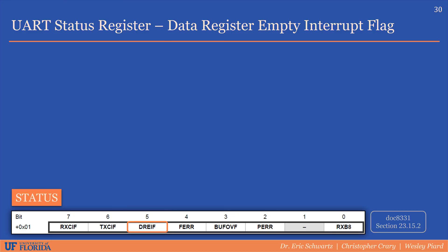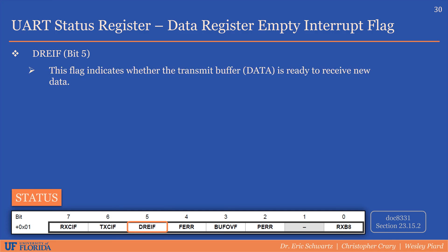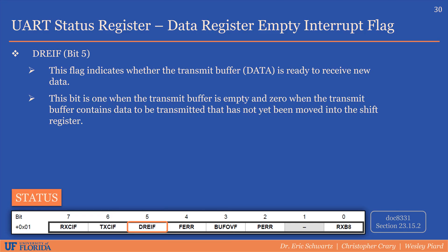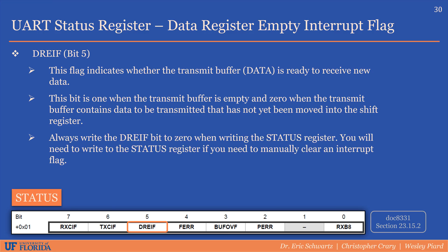The data register empty flag is bit 5 in the status register. This flag indicates whether the transmit buffer is ready to receive new data — it is 1 when the transmit buffer is empty, and 0 when the transmit buffer contains data to be transmitted that has not yet been moved into the shift register. Always write the data register empty flag to 0 when writing to the status register, such as when trying to clear the transmit complete interrupt flag. The bit is also cleared by writing to the data register.